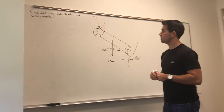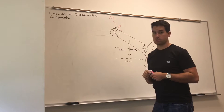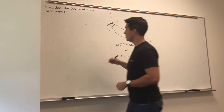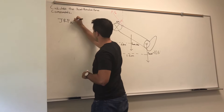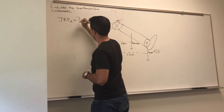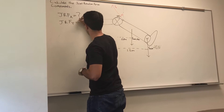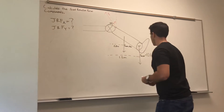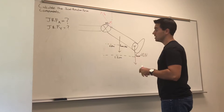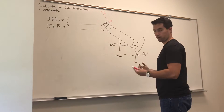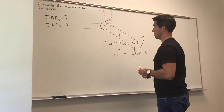For this problem, we're being asked to calculate the joint reaction force components — the X and Y components. So I'm going to write that here just so I know what I'm solving for: JRFX and JRFY, because those are the X and Y components of the joint reaction force. The first step when you have a problem like this is to draw everything in, draw in your coordinate system, and do some definitions with your drawing.